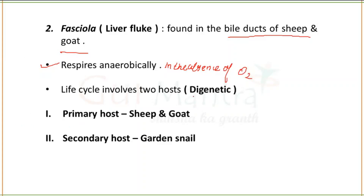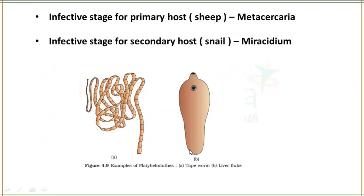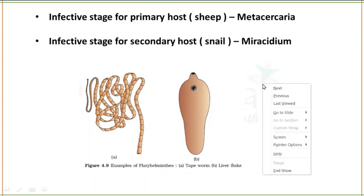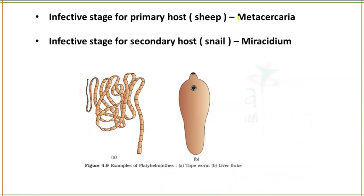The infective stage for the primary host (sheep or goat) is Metacercaria larva. The infective stage for the secondary host (snail) is Miracidium. Remember these names as they are important for exam questions.